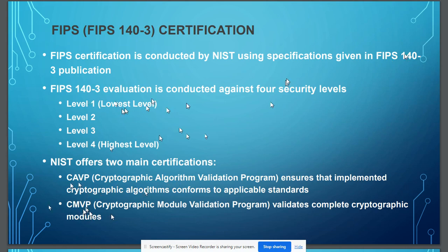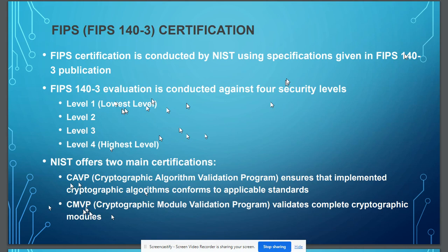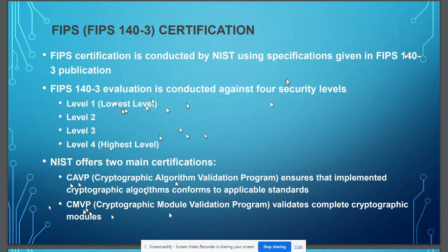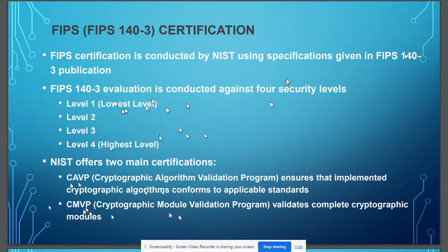Once CAVP is done, we go for CMVP — the Cryptographic Module Validation Program. In this case, we are not only looking at the algorithms; we are looking at the complete environment. For example, if we are using OpenSSL for implementing the algorithms, in CAVP we provide input to OpenSSL and check the output, but in CMVP the complete environment — which could be part of an operating system — has to be verified and tested with our module.